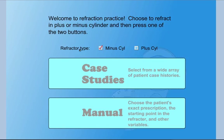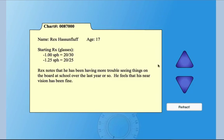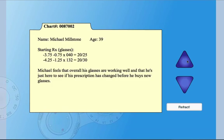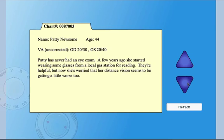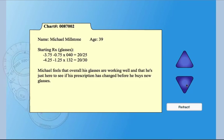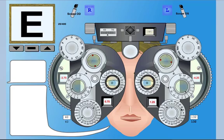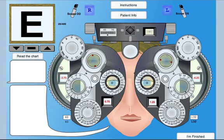Or you also have the option of some case studies where there's just a number of patients they can choose from of varying ages, best corrected vision, and prescriptions, and then choose one and do a refraction. Basically, we have a phoropter and an eye chart, and it may look a little intimidating, just like those things normally might to a new practitioner, but basically this works just like a phoropter.